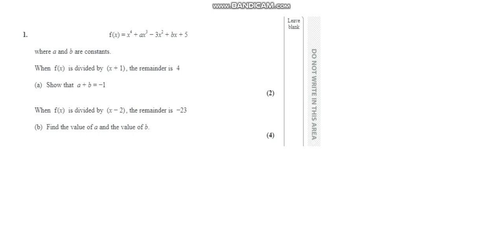The first question has a function f(x) which is equal to x to the power 4 plus a, to the power x, into 3 minus 3x squared plus bx plus 5, where a and b are constants. When f(x) is divided by x plus 1 the remainder is 4, and part (a) asks us to show that a plus b is equal to minus 1. That's 2 marks, so you have to show the working here.